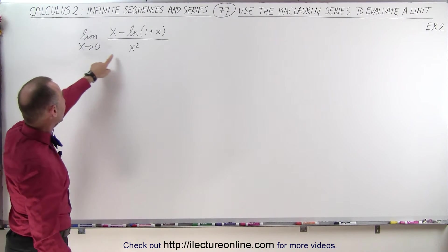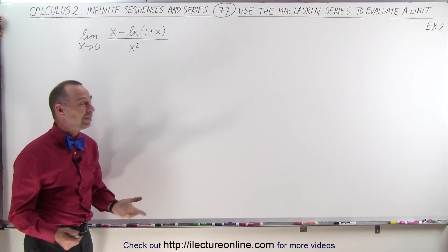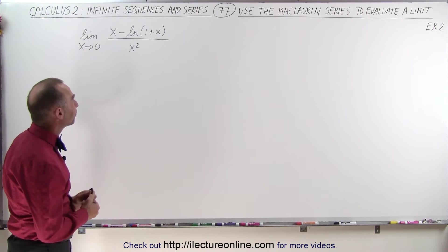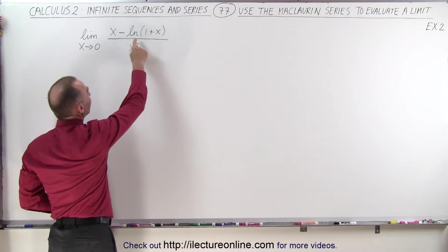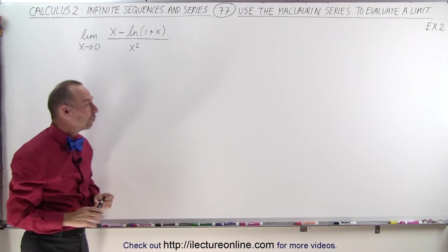Of course, when we let x go to 0 immediately, the denominator will become 0 and that's undefined. So how do we solve that? We should recognize we have the natural log of 1 plus x in the numerator, and we should know the Maclaurin series for that.